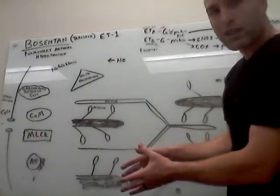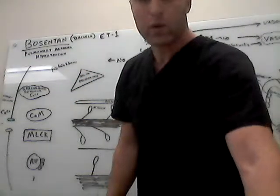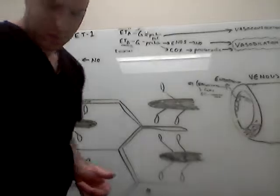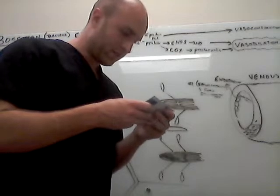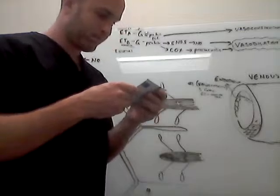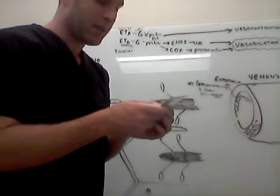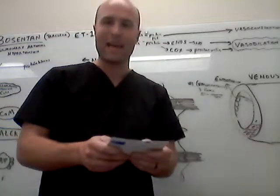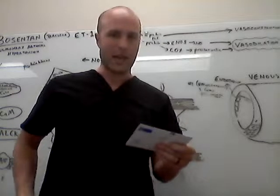How does nitric oxide tie into all this? How does Bosentan tie into all this? Quick recap. Bosentan is a competitive antagonist of both ETA and ETB receptors. But the net effect is vasodilation. It's competing for the binding sites for ETA and ETB receptors, so it causes vasodilation.